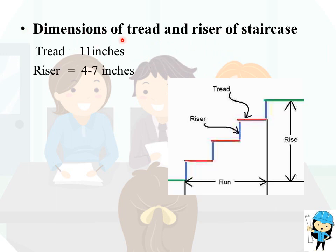Dimensions of tread and riser of a staircase: the tread is where we place our foot, and the riser is the vertical component. The tread is 11 inches; the riser has a value of minimum 4 inches to a maximum of 7 inches.